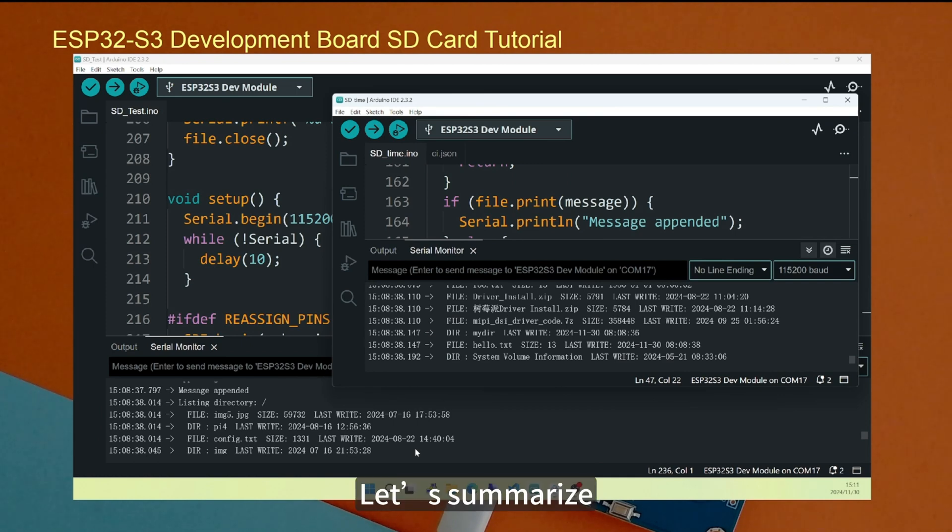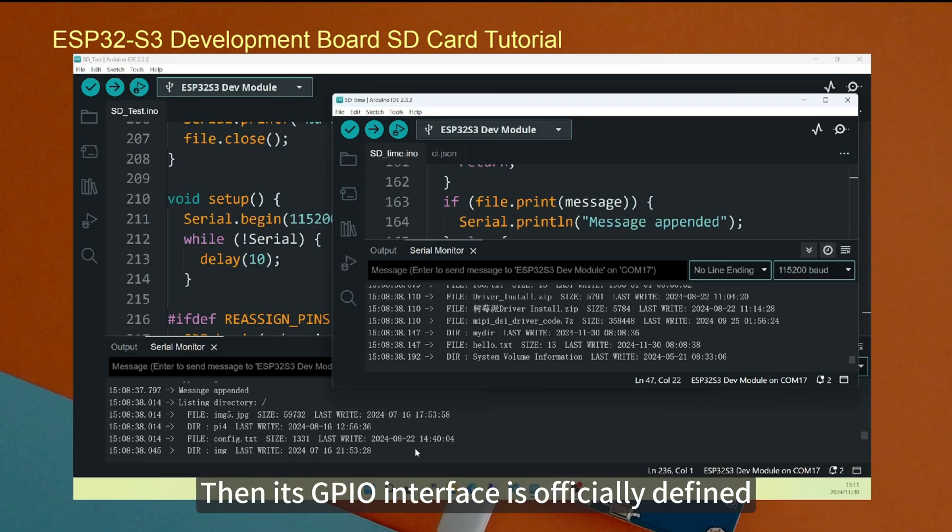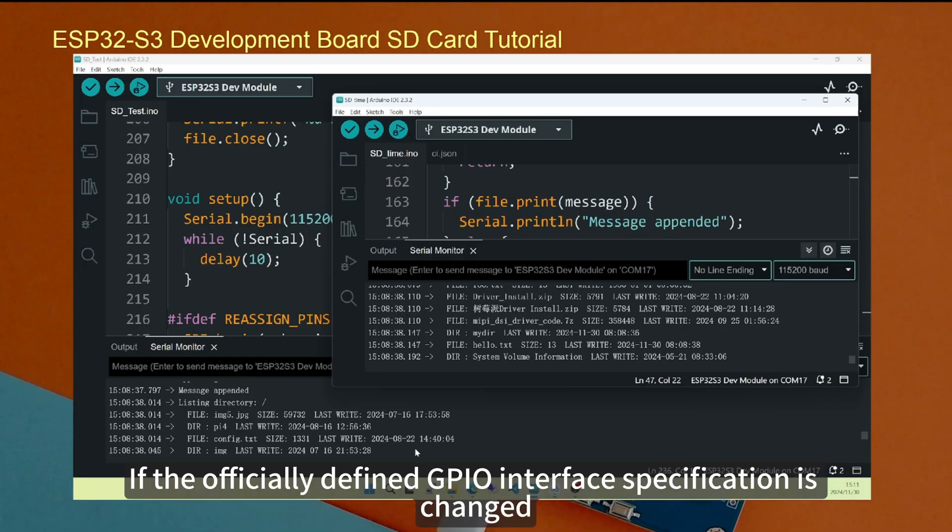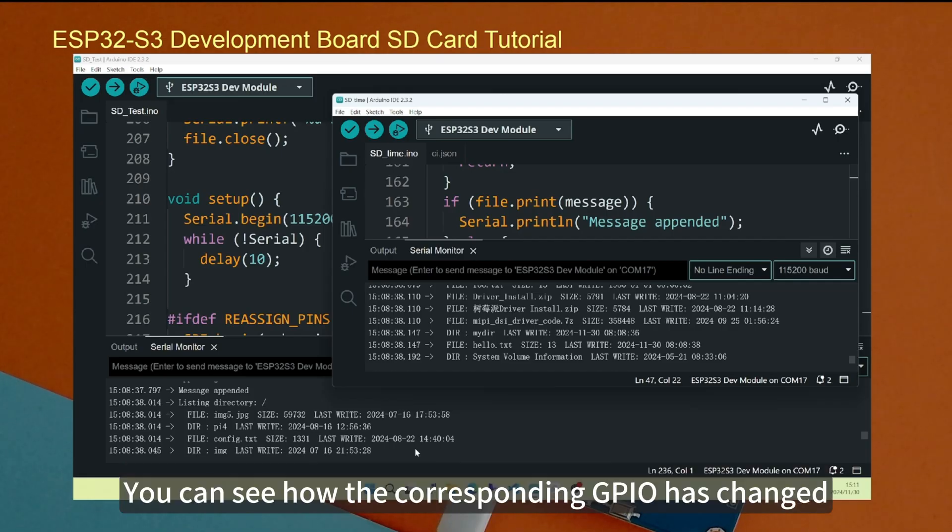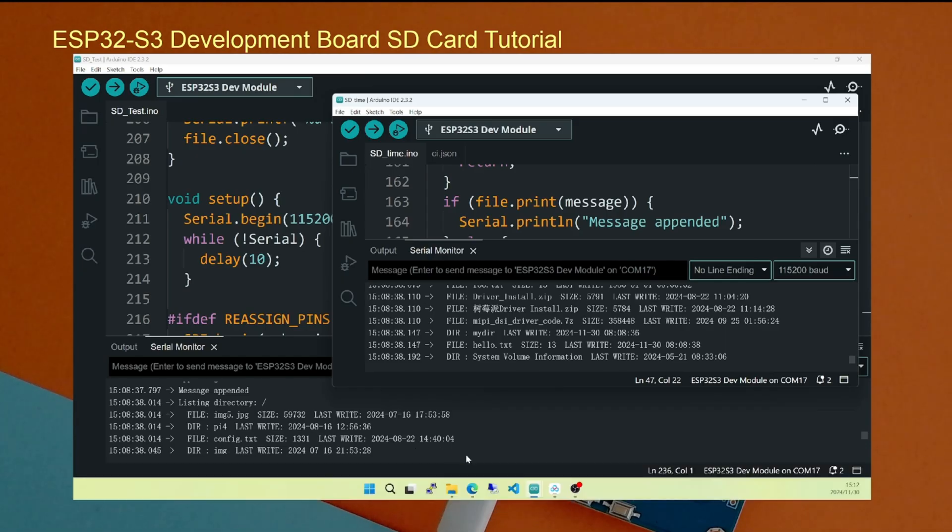Let's summarize. We use SD card. First of all, its communication protocol is SPI protocol. Then its GPIO interface is officially defined. If the officially defined GPIO interface specification is changed, you can see how the corresponding GPIO has changed. Then make the corresponding changes directly when SPI is initialized. Okay, this video ends here. Thank you for watching.